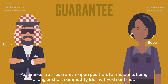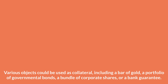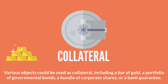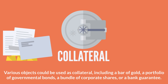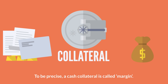The guarantee is called collateral. Various objects could be used as collateral, including a bar of gold, a portfolio of governmental bonds, a bundle of corporate shares, or a bank guarantee. An alternative concerns cash. To be precise, a cash collateral is called margin.